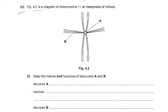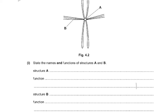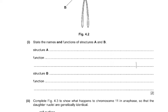Structure B is the spindle fibers, also called microtubules. Their role is separating the chromatids at the end of metaphase or at the start of anaphase, and the movement of the chromatids or chromosomes to the opposite poles. You have to give the name and function of both structures A and B.